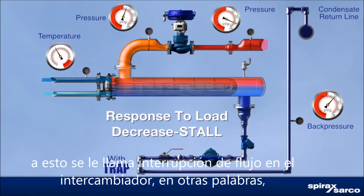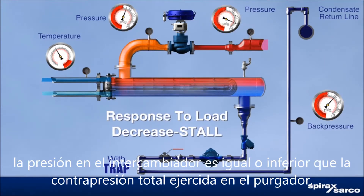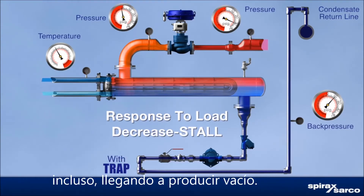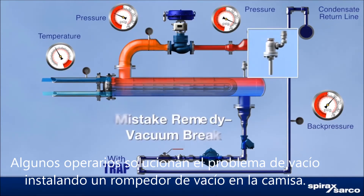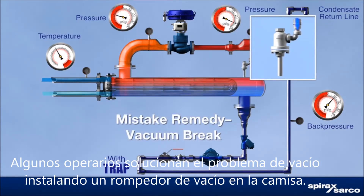In other words, the pressure in the heat exchanger is equal to or less than the total back pressure imposed on the steam trap, sometimes even attaining vacuum. Some operators address vacuum in the steam space by installing a vacuum breaker on the shell.